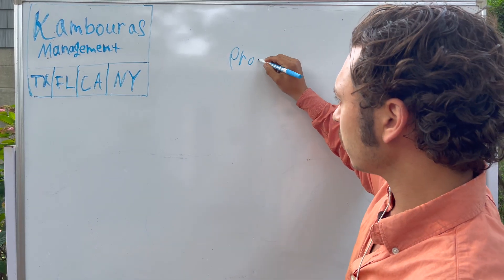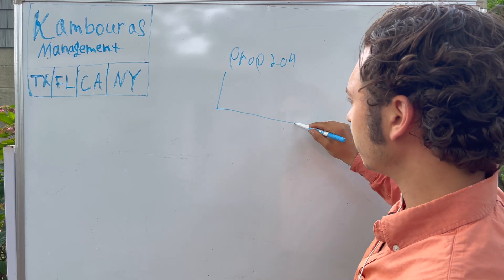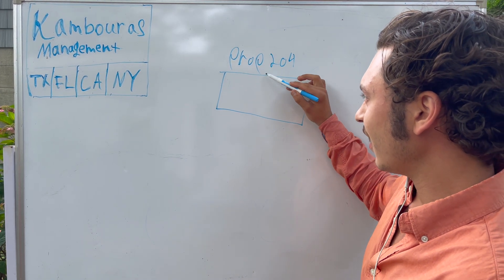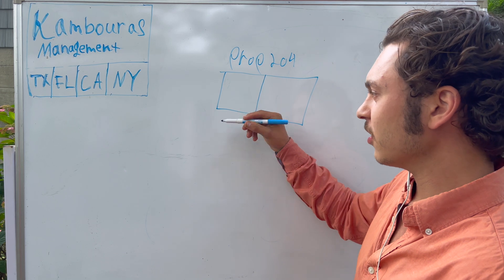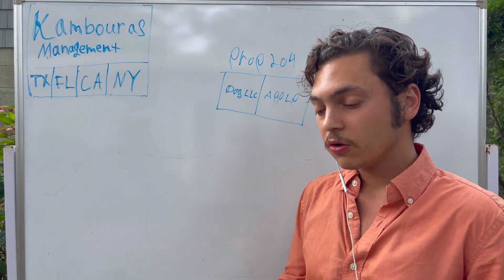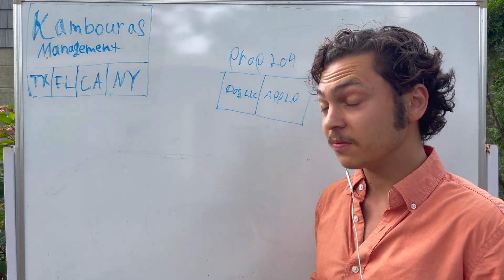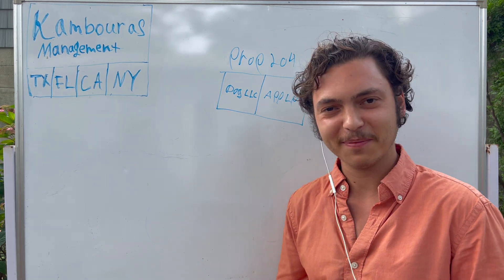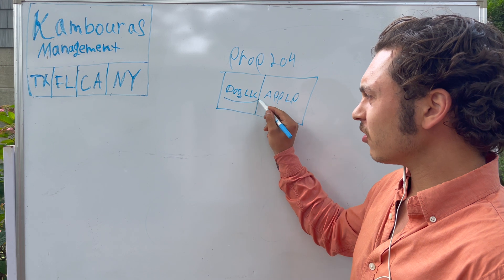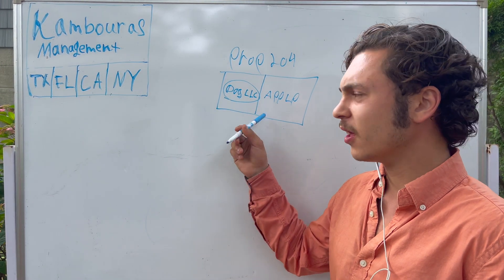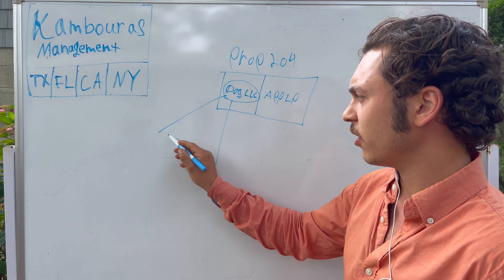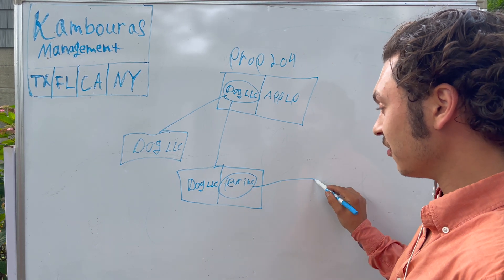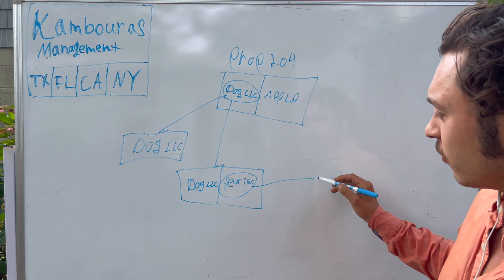To start off, you have a property — we're going to say Prop 204. Let's say a shopping center. This property has two owners. You're researching this property and it's owned by these two people. You look into one owner and find that Dog LLC also owns like two other properties, and those properties might have other owners too. Pair Incorporated happens to also own another property. You see where this is going? Complex webs of real estate ownership.